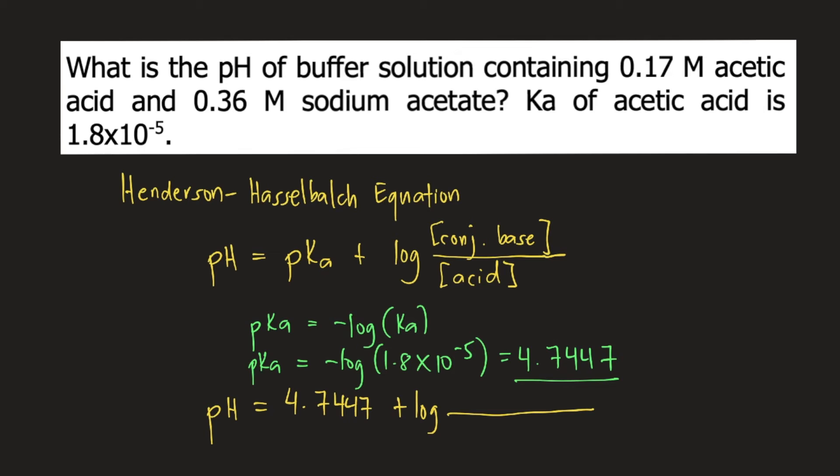The concentration of the conjugate base is 0.36 molar. Sodium acetate is our conjugate base, so you put 0.36 molar divided by the concentration of the weak acid. The concentration of acetic acid is 0.17 molar.